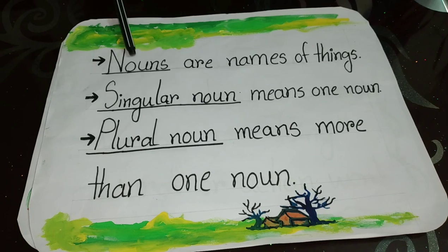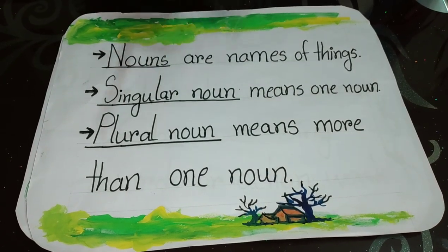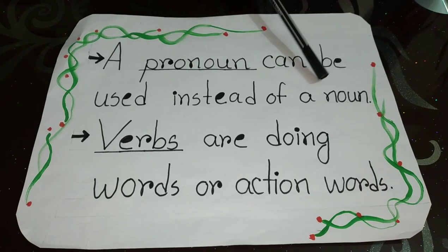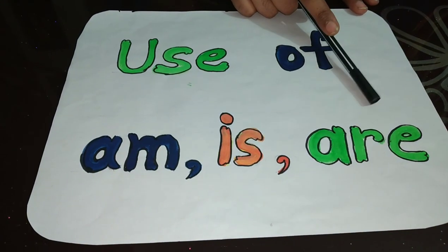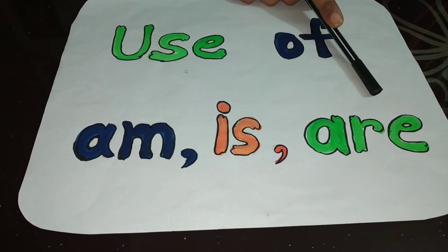Let's take the class. I hope you all have previous classes in which I explained to you about noun, singular and plural noun, and verb. We all know that nouns are names of things. Singular noun means one noun. Plural noun means more than one noun. A pronoun can be used instead of a noun. Verbs are doing words or action words. Why am I saying this? Because Am, Is, and Are are called auxiliary verbs that help to tell information about nouns or pronouns in the present tense. Present tense indicates the current time period.